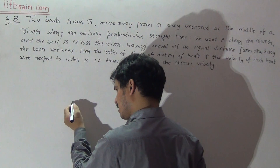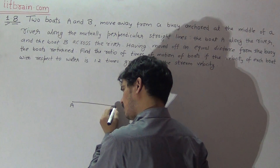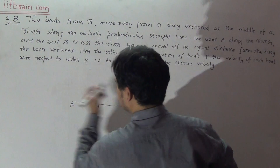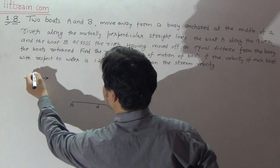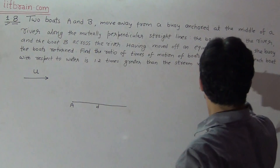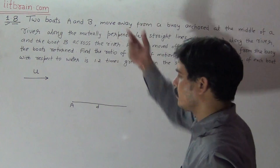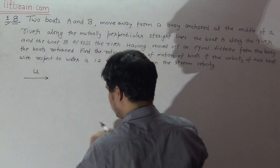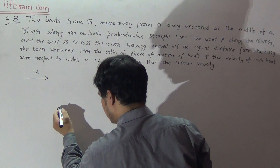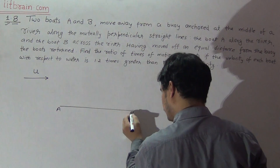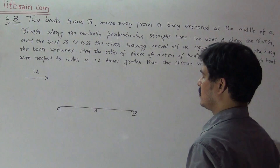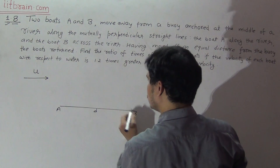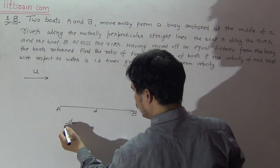Boat A is moving along the direction of the river, up to a distance D. The direction of flow of the river has velocity U, and the velocity of the boat is 1.2 times that of the river, so the velocity of the boat is 1.2U. Point A is the starting point, P is the final destination, and D is the distance traveled.